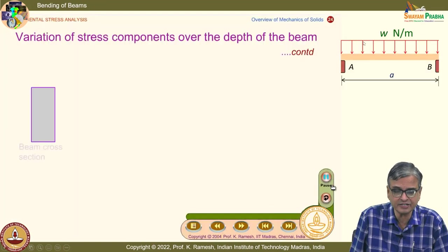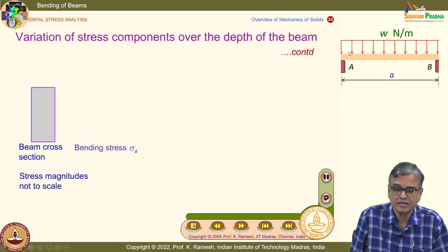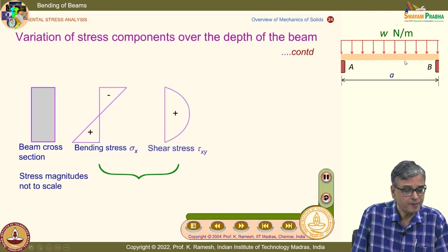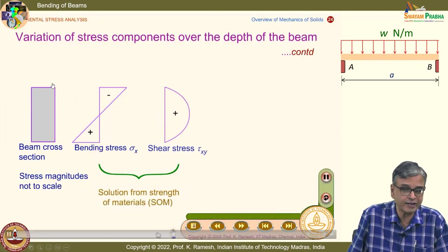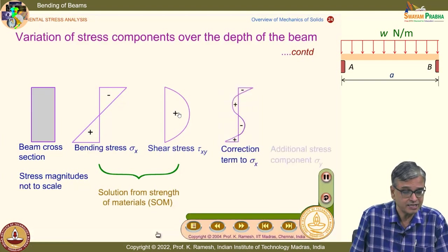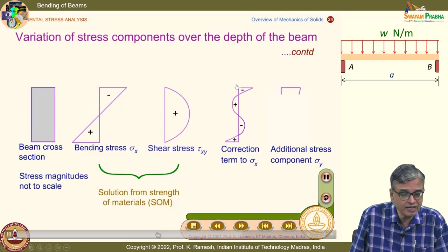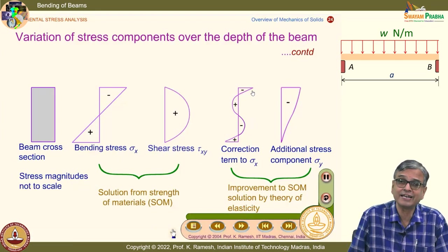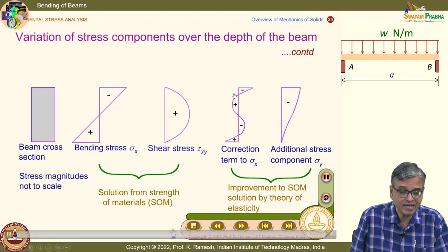We also looked at another deviation: for a uniformly distributed load — common in civil engineering as the self-weight — the strength of material solution for a rectangular cross section is not exactly in order. There is a small non-linear component in the normal stress variation. Additionally, in pure bending there is no σ_y stress component, but when there is a distributed load, you do have a normal stress σ_y, which theory of elasticity accounts for.